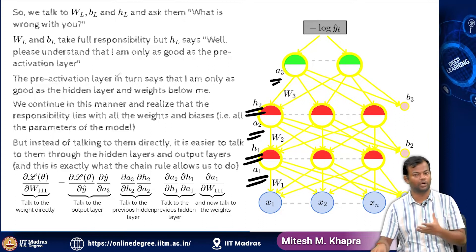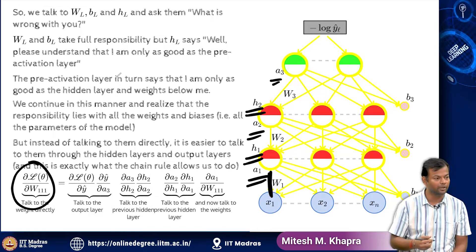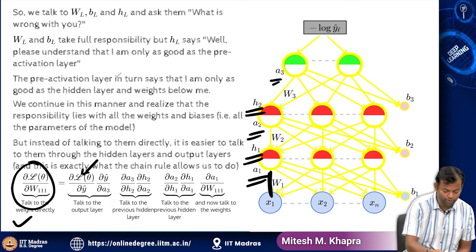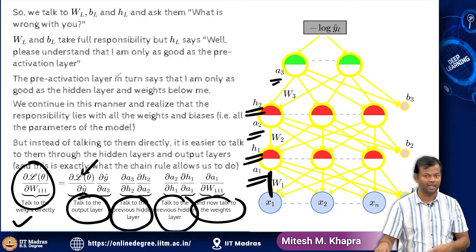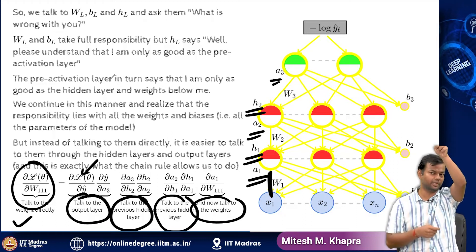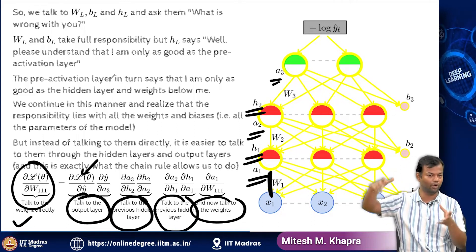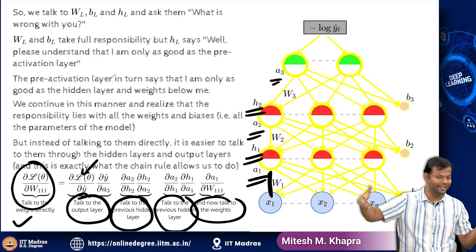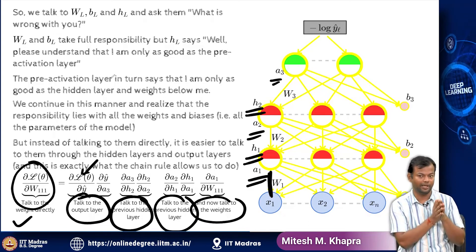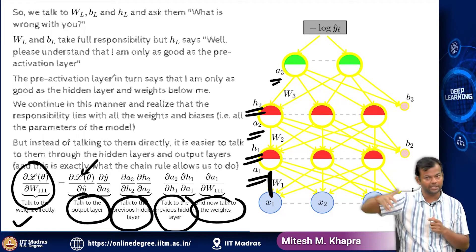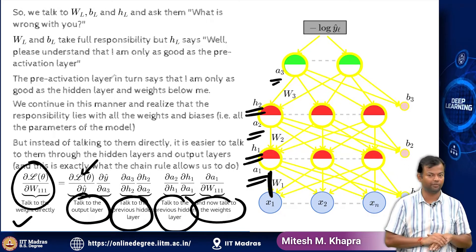So I was interested in finding the responsibility of this first weight. But instead of talking to the weight directly, I first spoke to the output layer, then I spoke to the previous hidden layer, then the previous hidden layer, and now I am talking to the weights. So I have constructed this chain rule because directly talking to the weight of interest is hard — remember, sine of cosine of e of log of something, a long chain. If I directly try to compute the derivative, it is hard. But if I break it down into the chain rule, it is easier. So that is what I am trying to do here: you are interested in the derivative of the loss function with respect to some weight, you talk to these intermediate guys, find out each of their responsibility, and using those computations, find the responsibility of the weight that you are interested in.